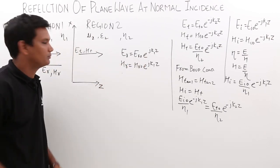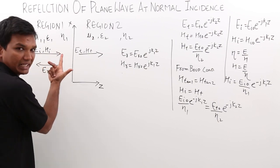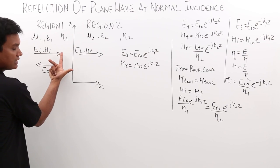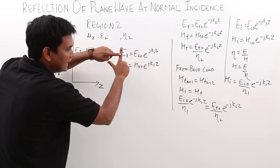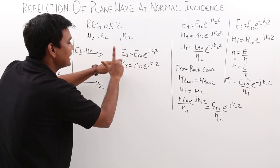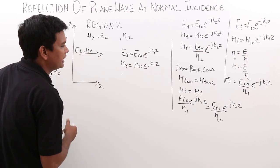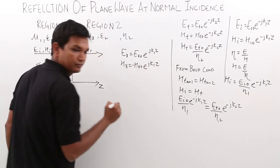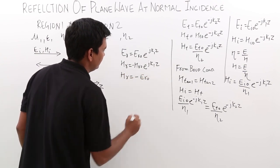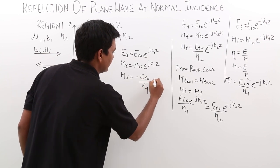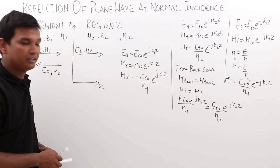Consider the direction of propagation, electric field, and magnetic field for the incident wave. When the wave reflects back, the direction of propagation reverses. The electric field continues pointing in the same direction, but the magnetic field direction reverses — for example, if it was along y, it becomes minus y. Er equals Ero times e to the power plus j k1 z, and Hr equals minus Ero divided by eta1, times e to the power plus j k1 z.